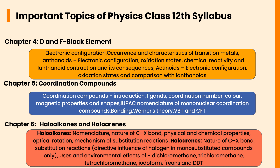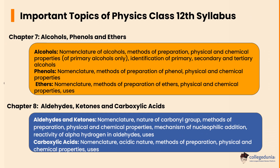In Chapter 6, Haloalkanes and Haloarenes, important topics are nomenclature, nature of C-X bond, physical and chemical properties, optical rotation, mechanism of substitution reactions, directive influence of halogen in monosubstituted compounds only, uses, and environmental effects of dichloromethane, trichloromethane, tetrachloromethane, iodoform, freons, and DDT.